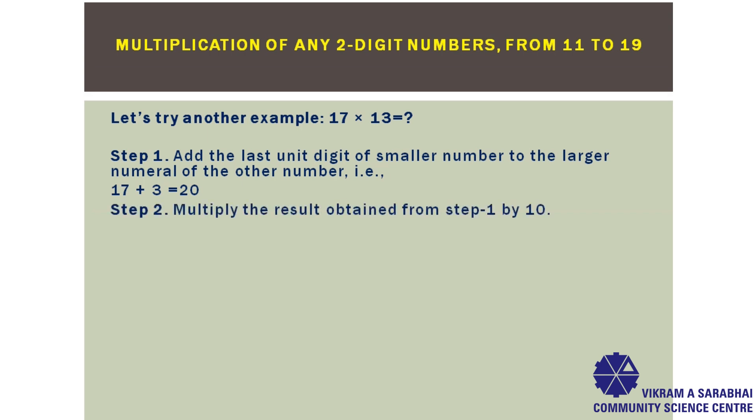In the next step, multiply the result obtained from step 1 by 10. So, from step 1, 20 multiplied by 10 will get 200.